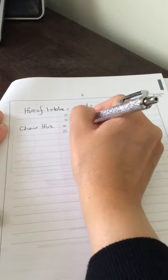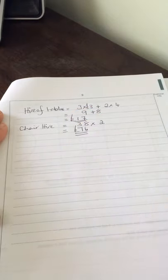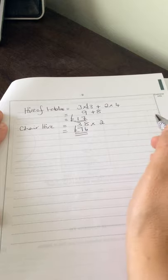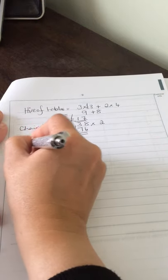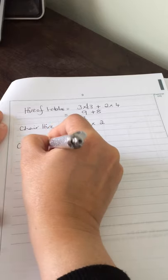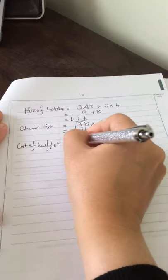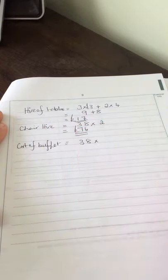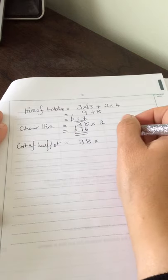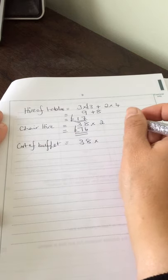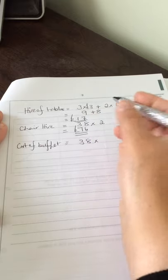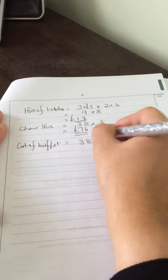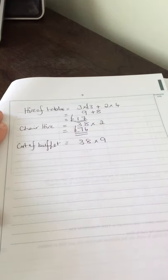So far we've got the hire of the tables and the hire of the chairs. The last part we said we needed to work out was the cost of the buffet. Now we know there are thirty-eight people, and each person, I said hog roast earlier, but it's not, it's the buffet meal they picked. The buffet meal is nine pounds per person,